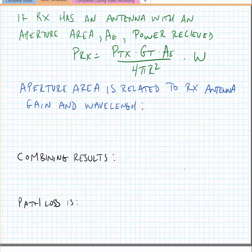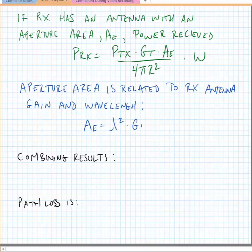The aperture area of the antenna is related to the gain of the receiving antenna and the wavelength of the frequency being received. Therefore, A_e equals the wavelength squared times the gain of the receive antenna, divided by 4π.